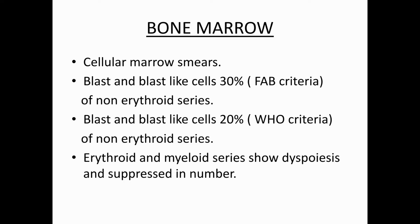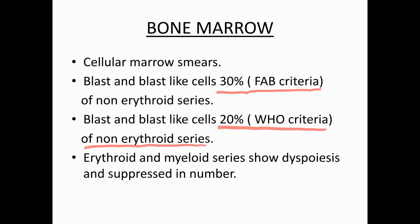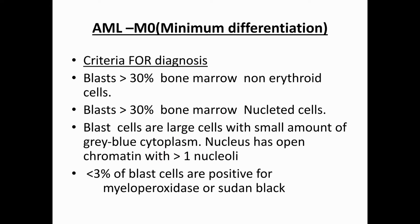Bone marrow criteria: blast cells more than 30% according to FAB, but according to WHO, more than 20% of non-erythroid cells, because in myeloid leukemia we study the myeloid series — blast, promyelocyte, myelocyte, metamyelocyte, and band form.